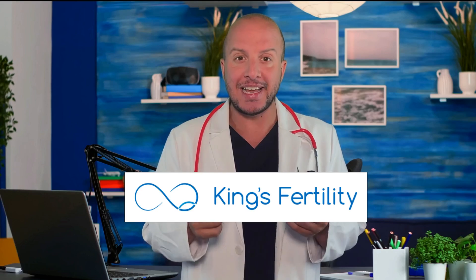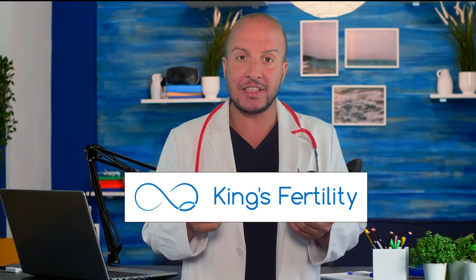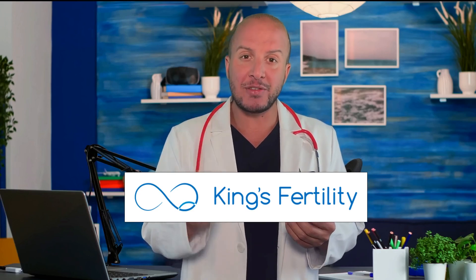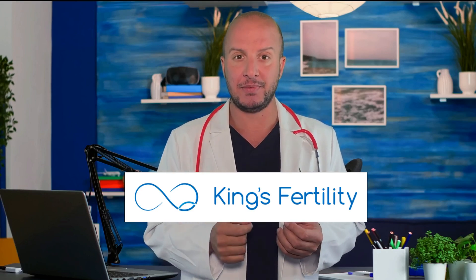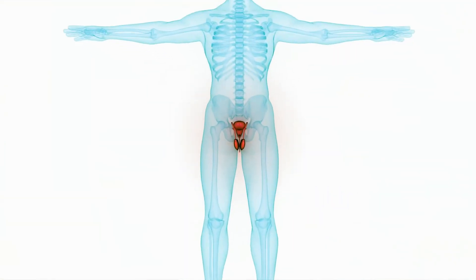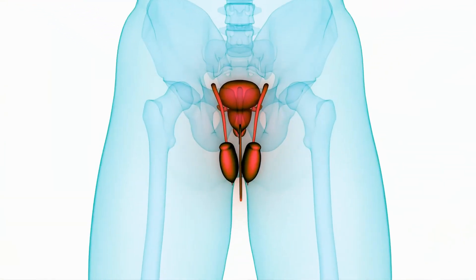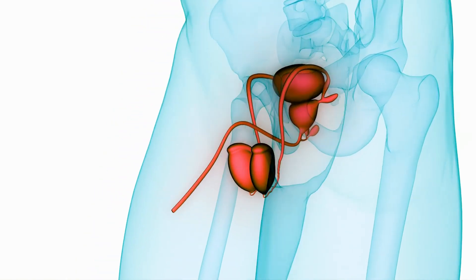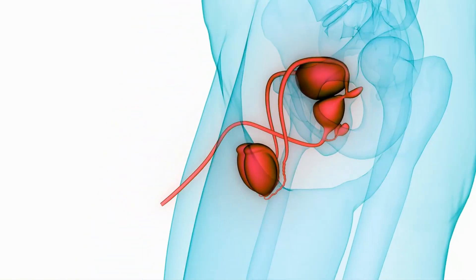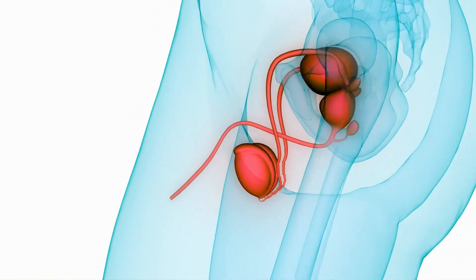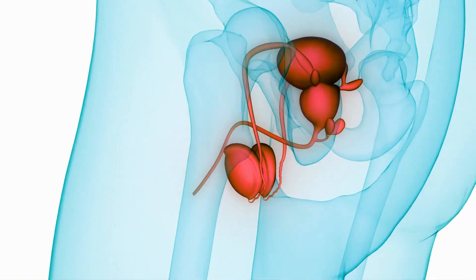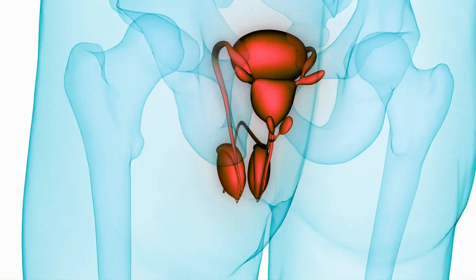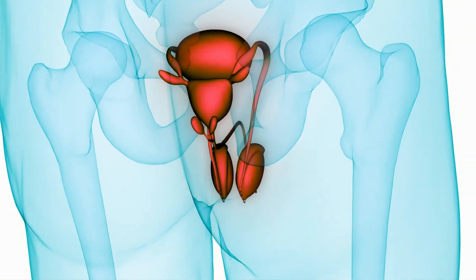The semen analysis is a key test to assess male fertility. Semen is produced by the testicles, where the sperm cells come from, and mixed with fluids from the prostate. In this test we measure several important factors.